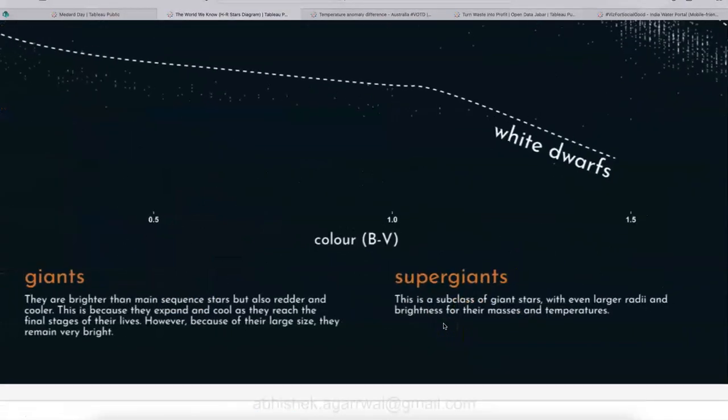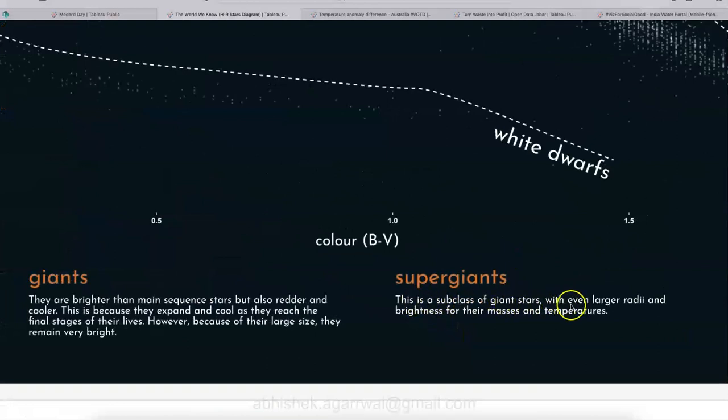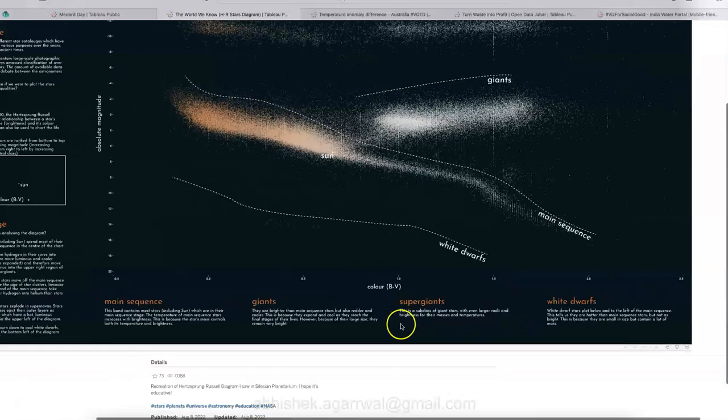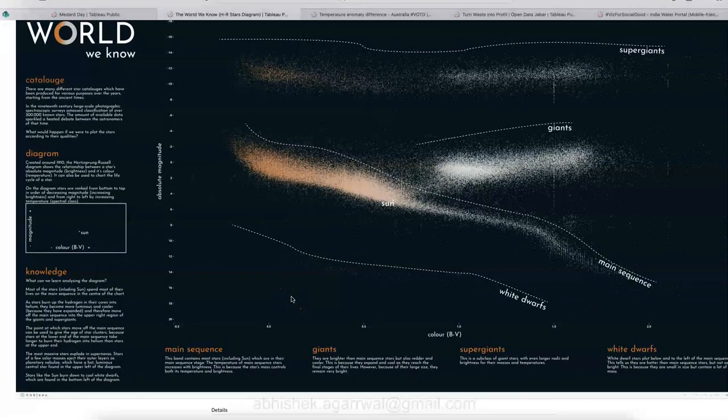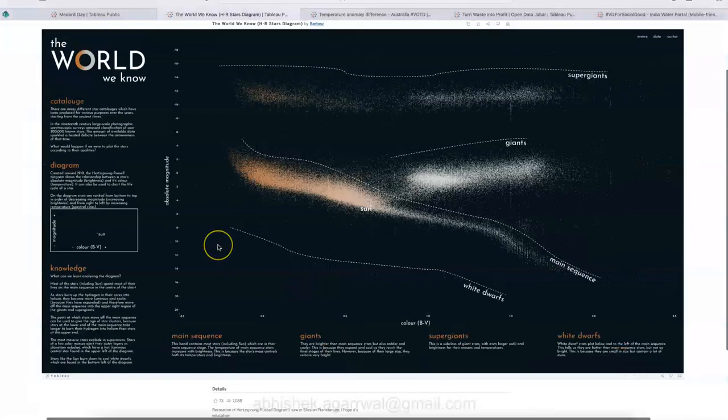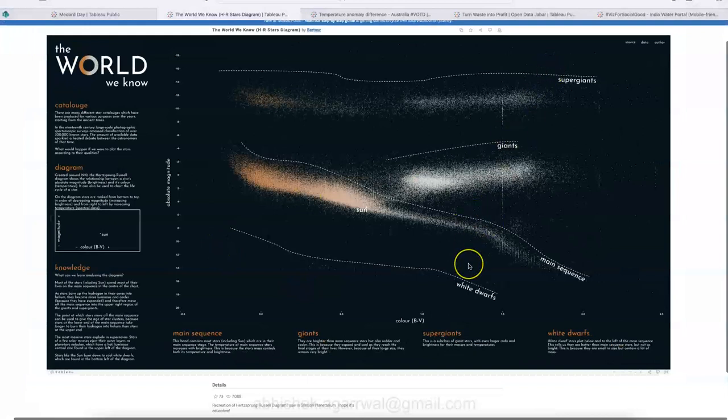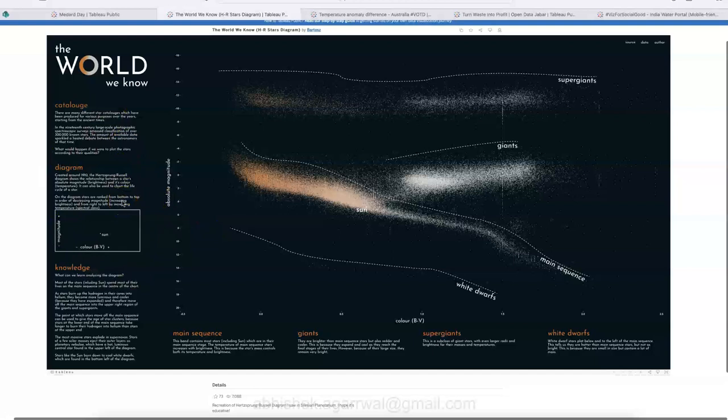This is a quick section about the knowledge, but this is where the section is written like what is super giant. What is giant? So here is a super giant, which is a subclass of a giant star with even larger red eye and brightness for their masses and temperature. So this is for someone who is knowledgeable or into the field of astronomy.